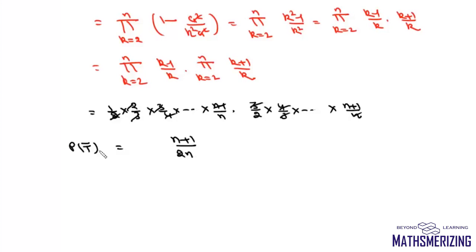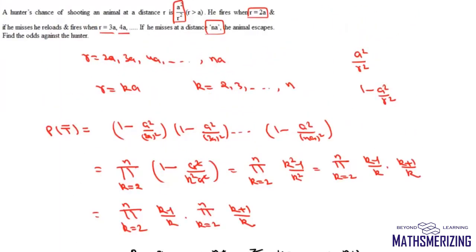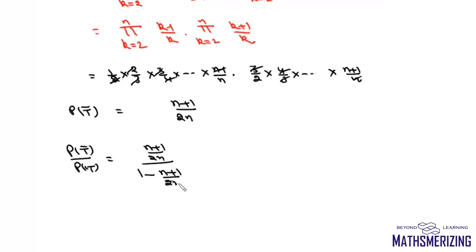So the probability that the hunter misses the target is (n+1)/(2n). To find the odds against the hunter, we compute P(miss) / P(hit), which is [(n+1)/(2n)] / [1 - (n+1)/(2n)]. This simplifies to (n+1):(n-1), and that is the answer.